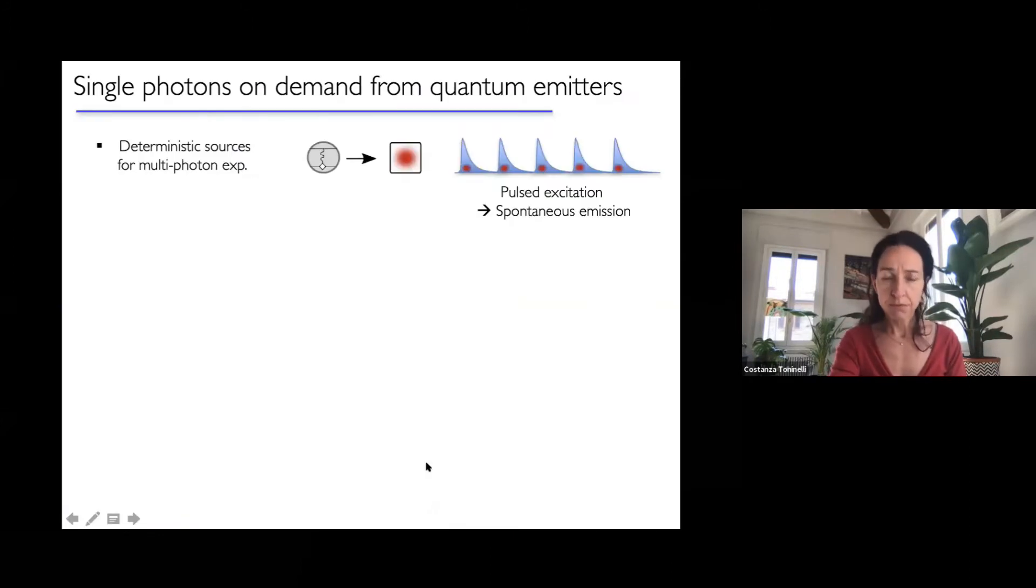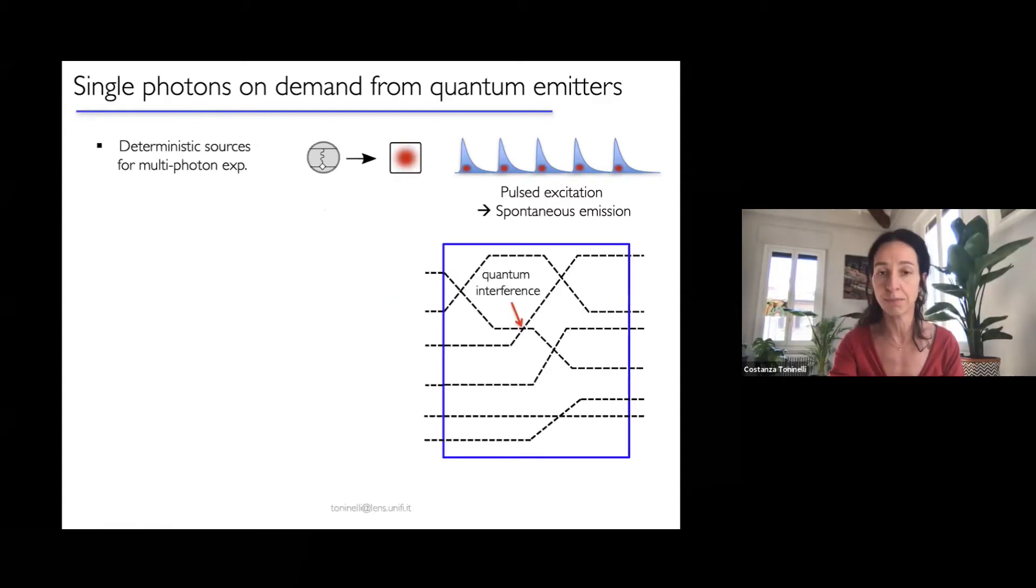Quantum emitters hold promise for the deterministic generation of single photons. Using triggered excitation, you can effectively populate the excited state of a radiative transition and after spontaneous emission obtain a train of pulses with one and only one photon per pulse. If this whole process is efficient, then this source works on a push button operation, which means, very importantly, that you can cascade several of them and realize an n single photon Fock state. This is an important resource for photonic quantum technologies that are essentially based on networks where photons propagate and undergo quantum interference whenever they meet at the node of the network.